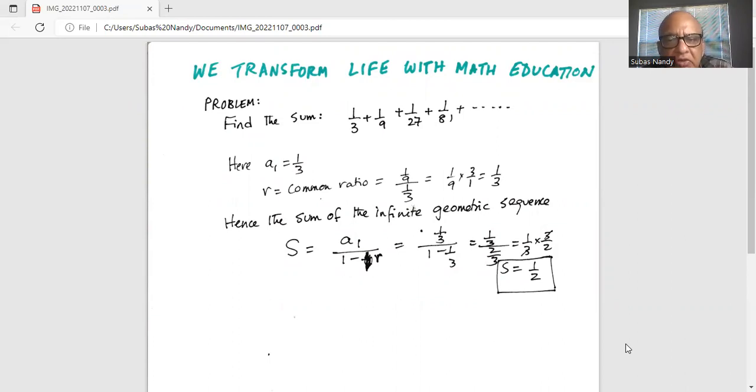Hence the sum of the infinite geometric sequence is S equals a1 divided by 1 minus r. My a1 is 1/3 in the numerator, 1 minus 1/3 in the denominator, so 1/3 divided by 2/3, which is 1/3 multiplied by 3/2, or the sum of the infinite series is S equal to 1/2.